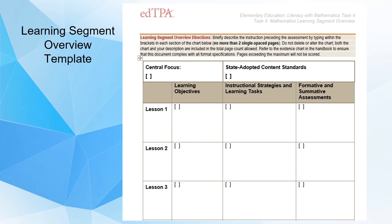Once you've got this sequence thought out, you'll use a template called the Learning Segment Overview — that's the title in the edTPA files. You'll cut and paste your information there: the central focus (the overall idea, derived from your standard), your learning objectives, the instructional strategies and learning tasks, and the formative and summative assessments. Start with the standard, pick an indicator, and create a central focus from that.